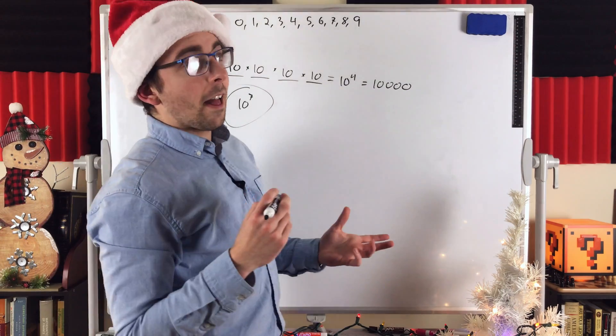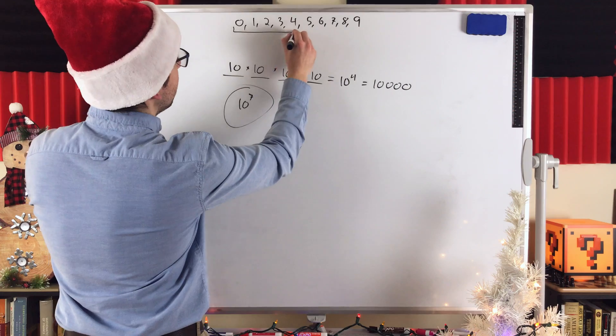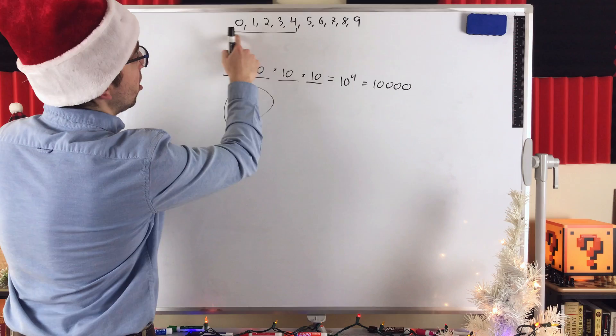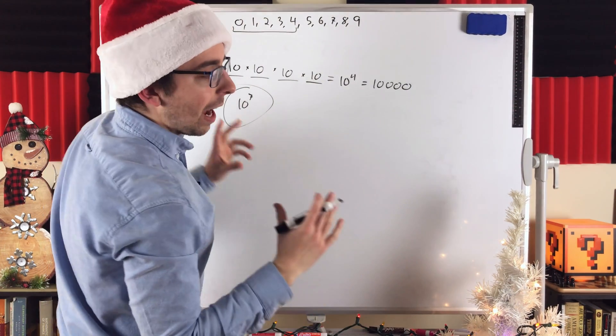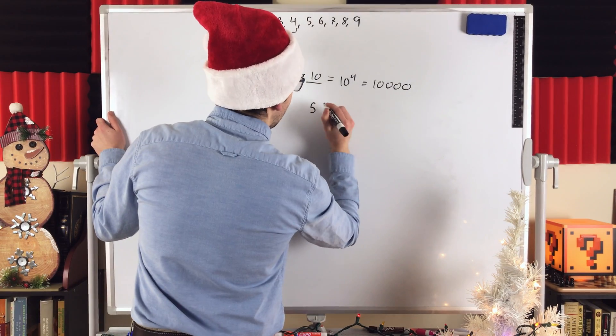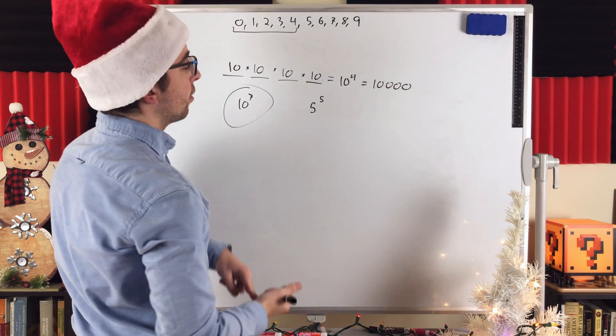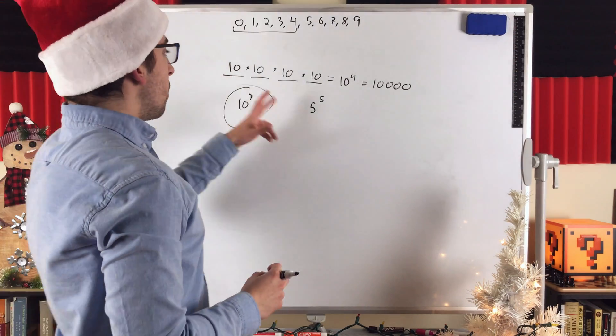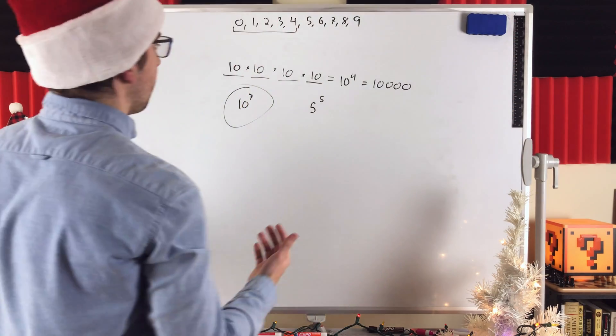Another similar problem would be, how many 5-digit codes are there using the digits 0 through 4 and allowing repetition? Well, how many digits are here? How many digits can we choose from? 0, 1, 2, 3, 4. That's 5 digits. So, how many 5-number codes can be created from those 5 digits? Well, that would be 5 to the power of 5. Because 5 digits can be in the first spot. 5 digits can be in the second spot. 5 digits can be in the third spot. And so on. So, by thinking about one problem, solving that one problem, we can use the same reasoning over and over again in a bunch of other situations.